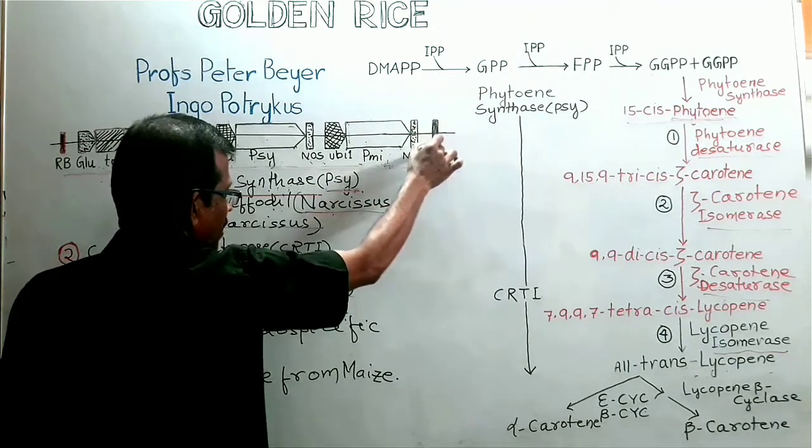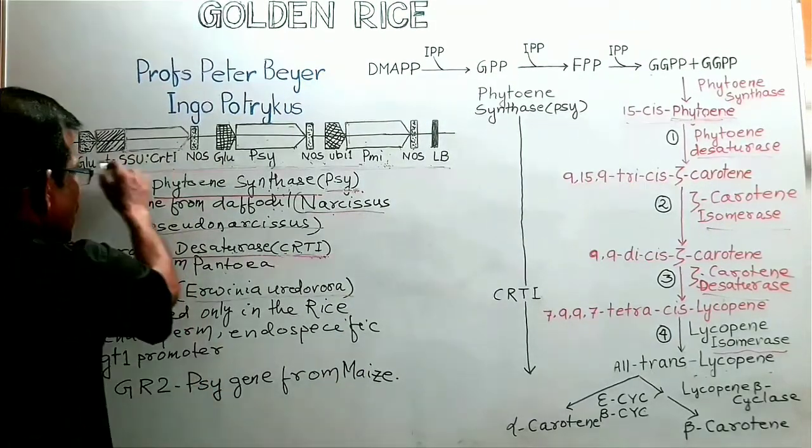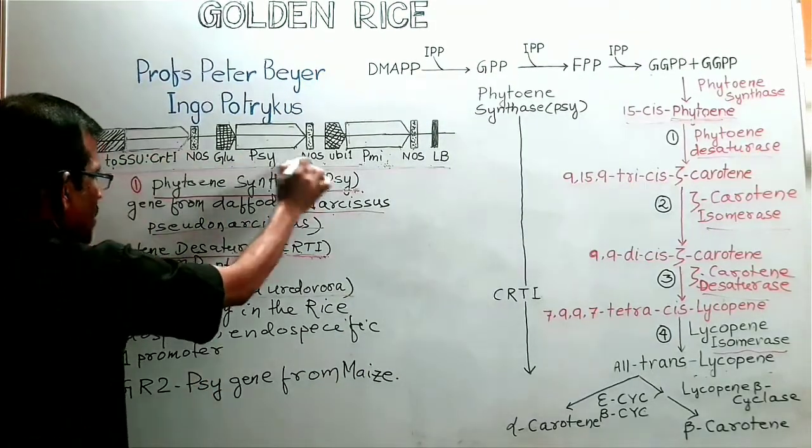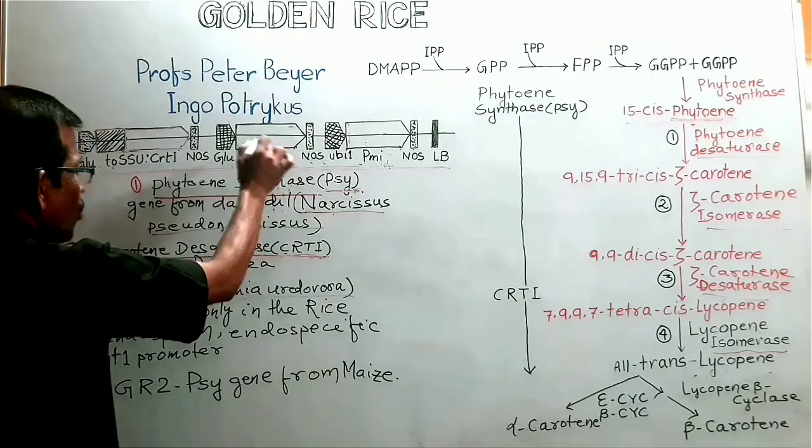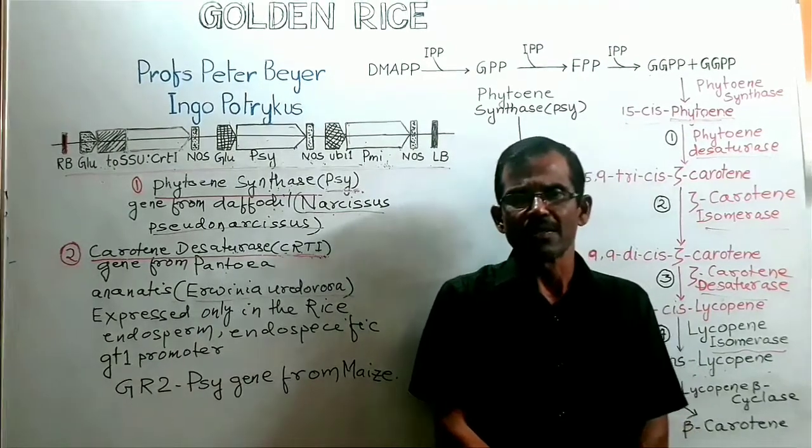And at last, this is the T-DNA left border sequence. So friends, this is the gene construct that is used to generate golden rice. So golden rice contains two transgenes.